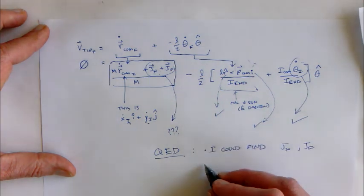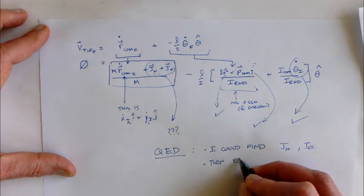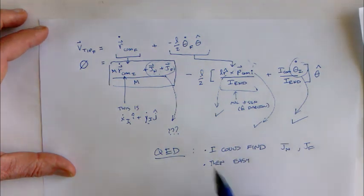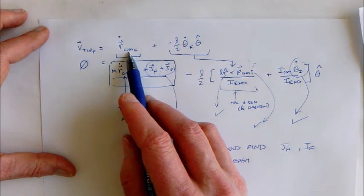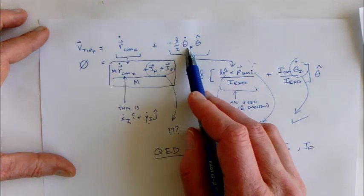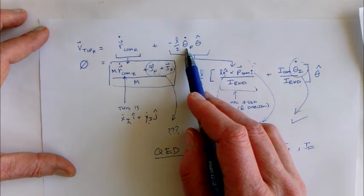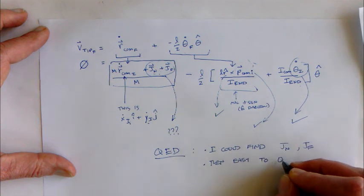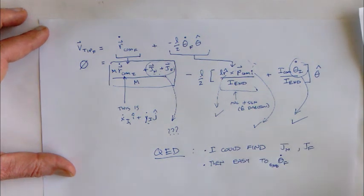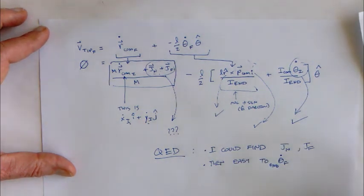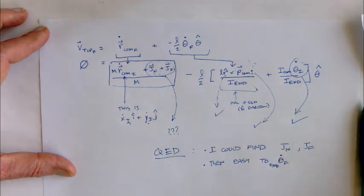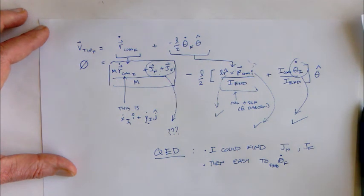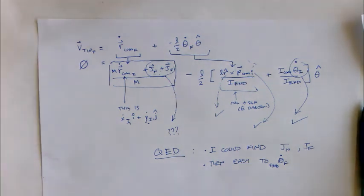Once we find the normal and frictional impulses, it's straightforward to figure out the final center of mass velocity and the final rotational velocity — and those two will actually be redundant in this particular case. At that point it would be easy to find θ-dot, which is what you need in order to proceed. I'm not going to do the algebra here — it's bad enough doing algebra live, and doing it on film is even worse because when you make a mistake you have to start all over again. But you can see that I actually could figure this out to proceed to the next step.